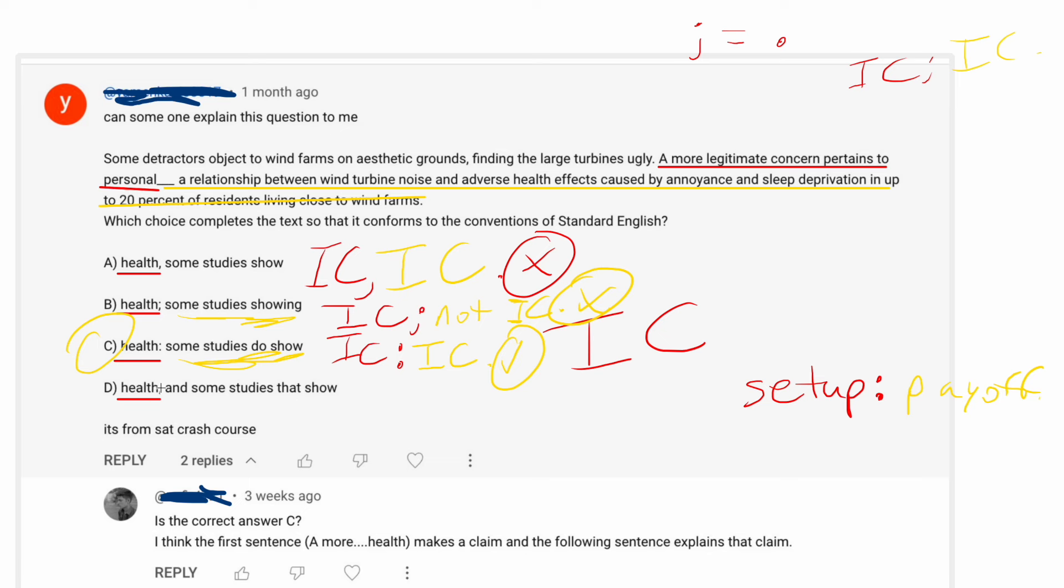And then D, I think the issue with D, well, there are two issues with D. The word that is unnecessary there. But it's also not really an and situation, meaning it doesn't really make sense to connect the red portion and the yellow portion with the word and. Because that's just not really how those parts relate. So yeah, the answer here is definitely going to be C.